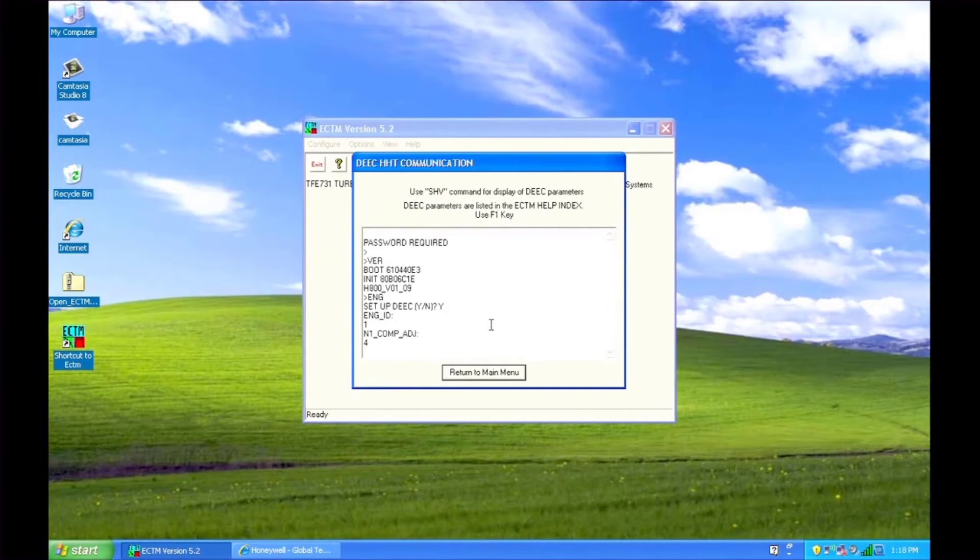Enter your engine ID code, compensation value, and specific gravity. Refer to the worksheet you filled out for this information. Make sure the MMSW setting is set to zero for auto mode. Push enter and return to the main menu.